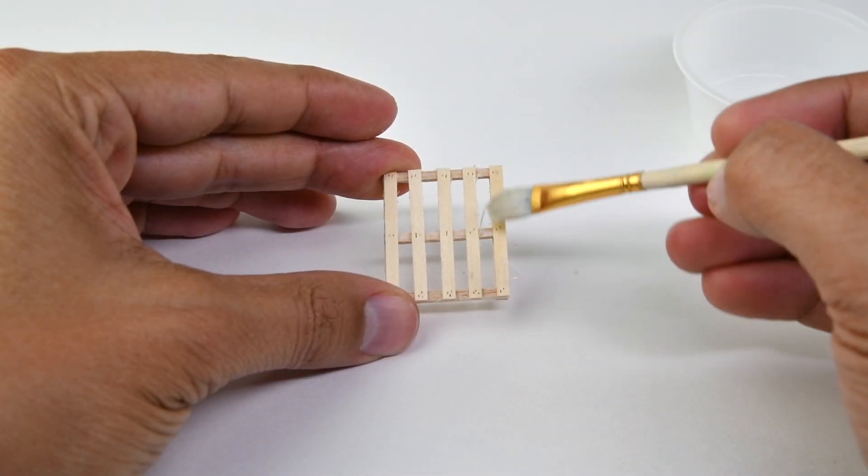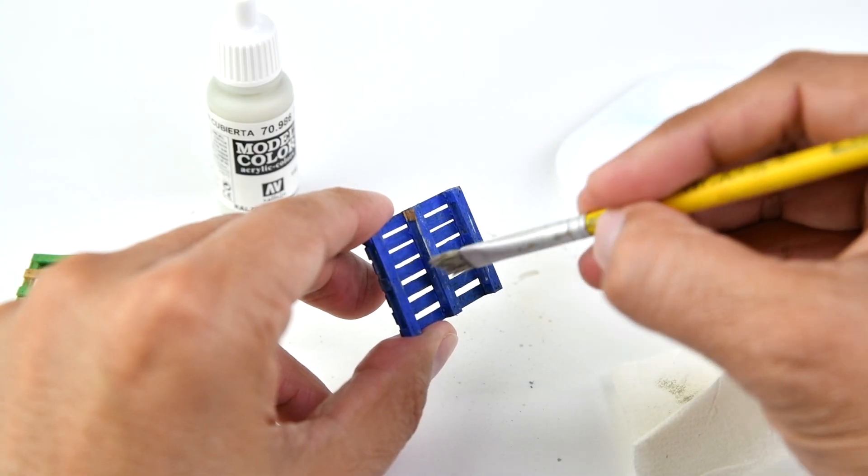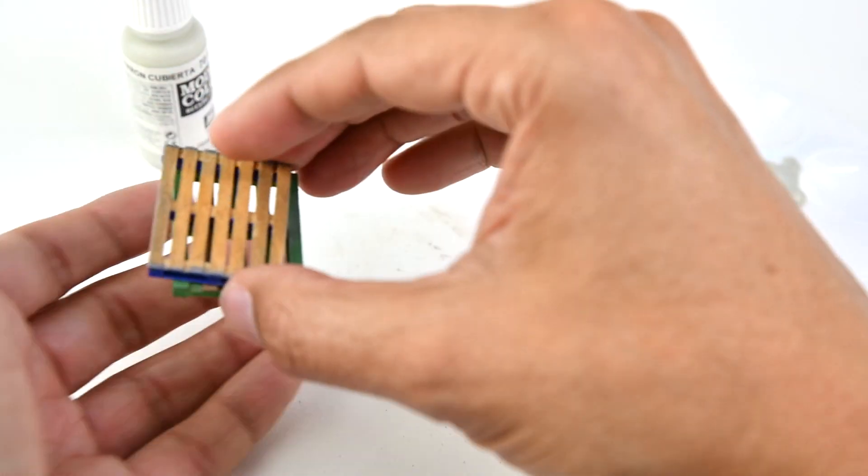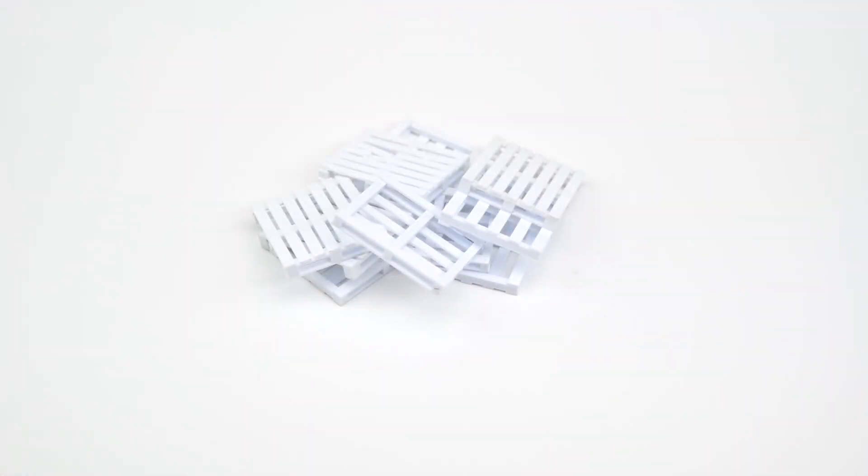In the last video we covered the painting and detailing process of the wood pallet in balsa wood. Today we will go over the process for the polystyrene pallets in order for them to look realistic and aesthetically pleasing.